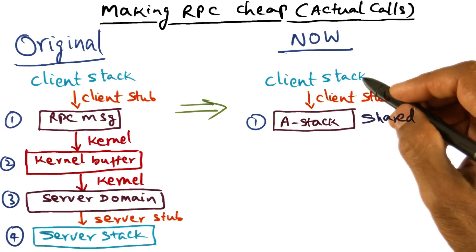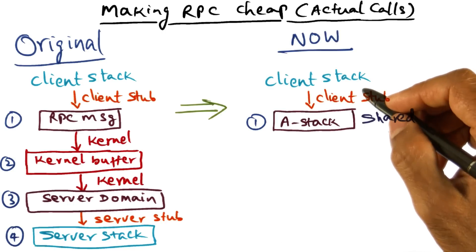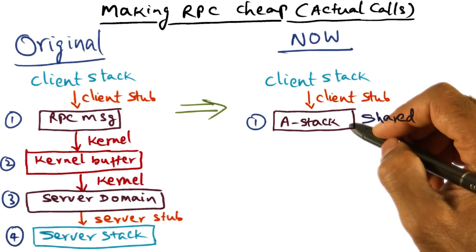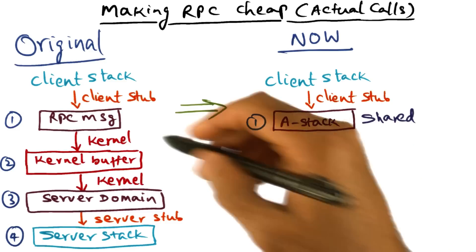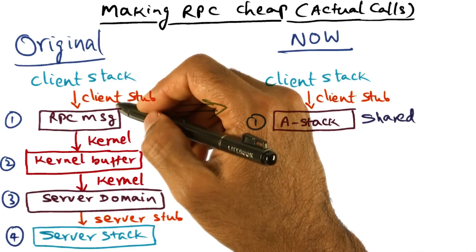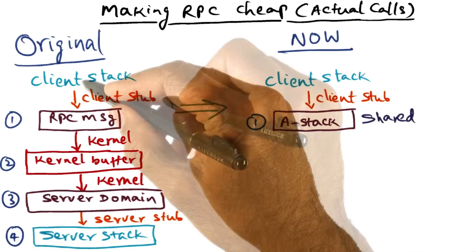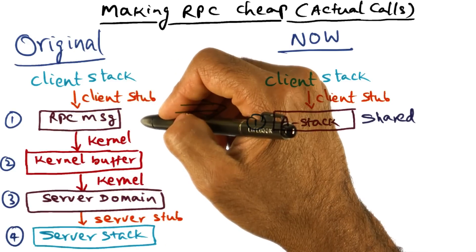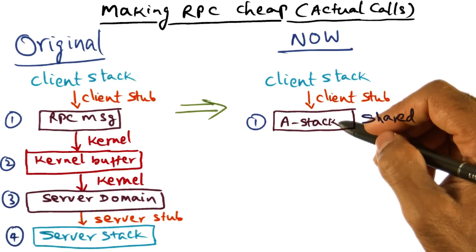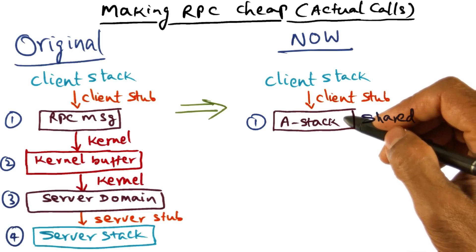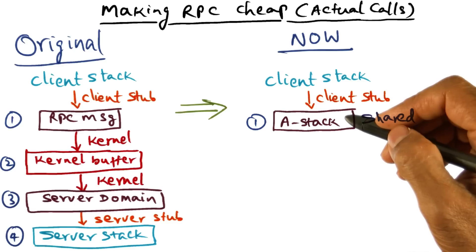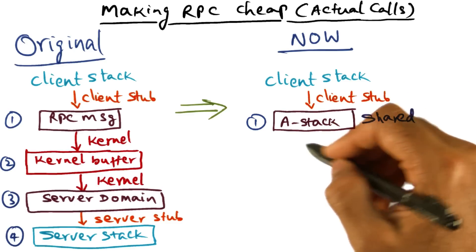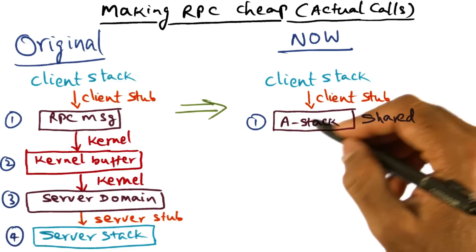Now, life is much simpler. All that is happening is on the client side, the client stub is copying the parameters into the A stack. That is very different from what was happening before, where the client stub had to serialize the data structures being passed as arguments into a sequence of bytes in the RPC message. Whereas here, it is simply copying, because the client and the server know exactly the semantics and syntax of the arguments being passed, and therefore there is no need to serialize the data structure.